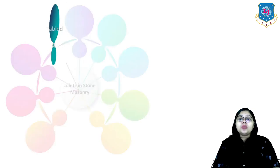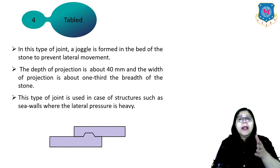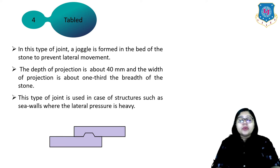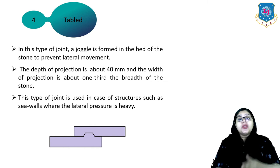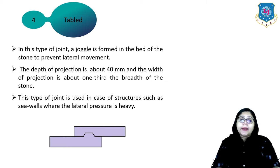The fourth type is the tappled joint. In this type, a joggle is formed in the bed of the stone to prevent lateral movement. The depth of projection is about 40 mm and the width of projection is about one third the width of the stone. This type of joint is used in structures such as sea walls where the lateral pressure is very heavy.